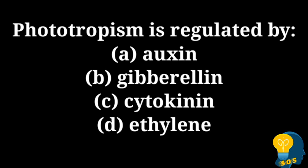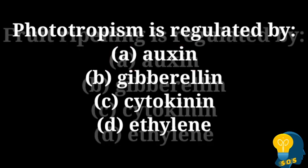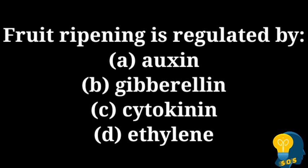The next question is: phototropism is regulated by? The options are option A: auxin, option B: gibberellin, option C: cytokinin, and option D: ethylene. The correct answer is auxin, because auxin is responsible for various tropisms — it reacts towards the conditions of light, gravity, and water as well. So the correct answer is auxin.